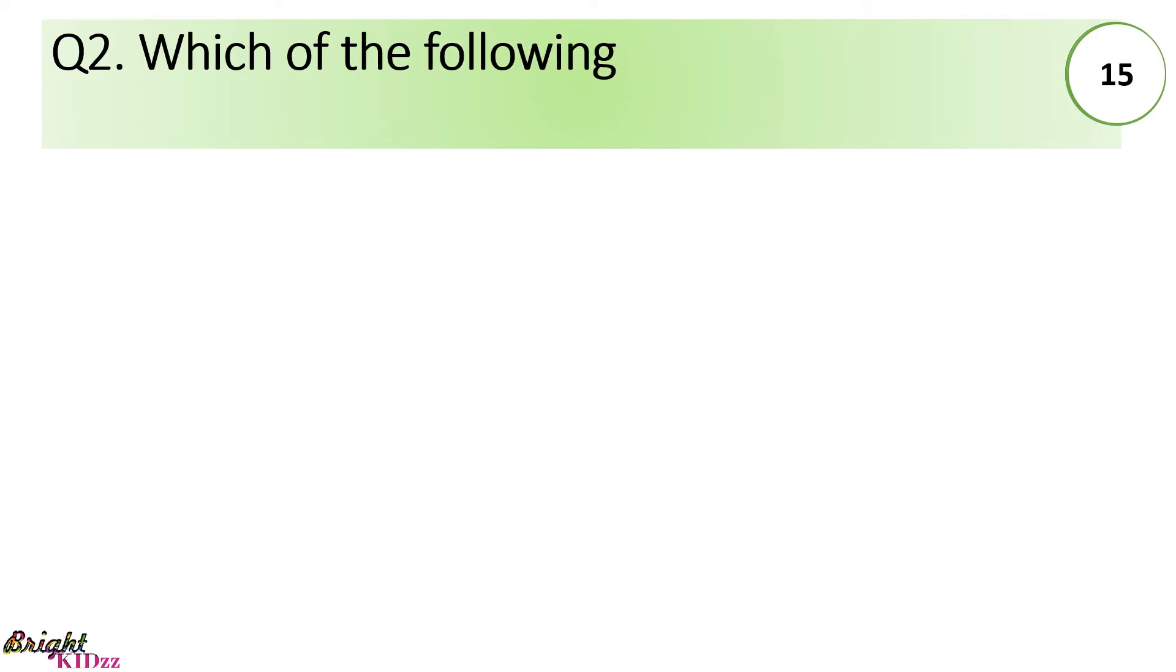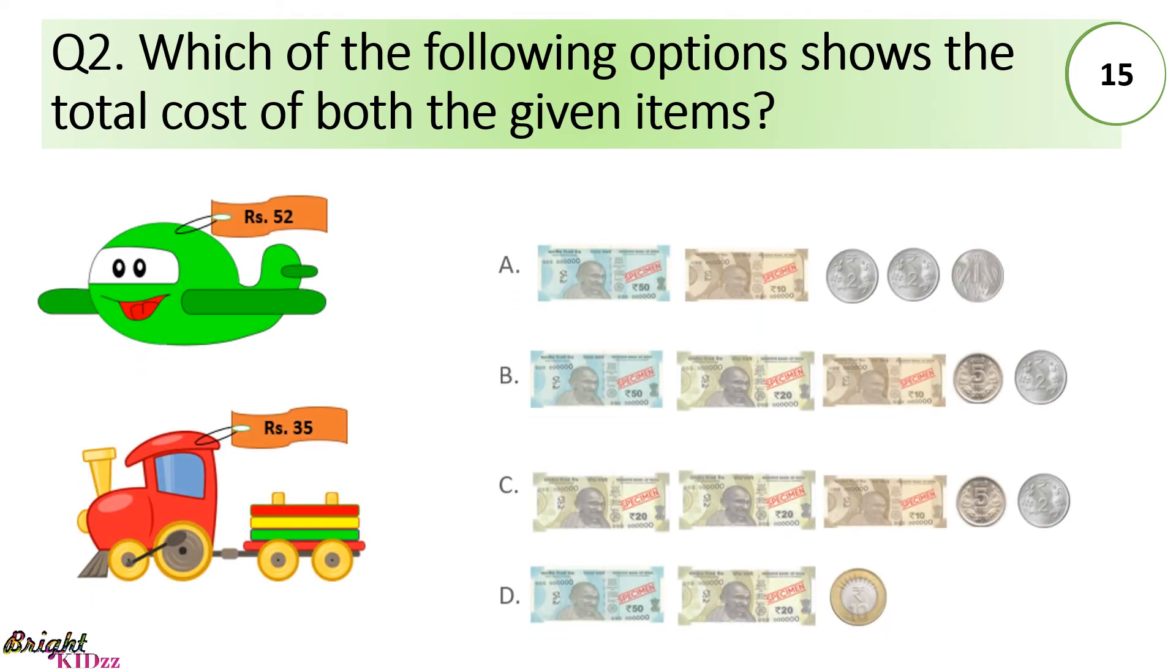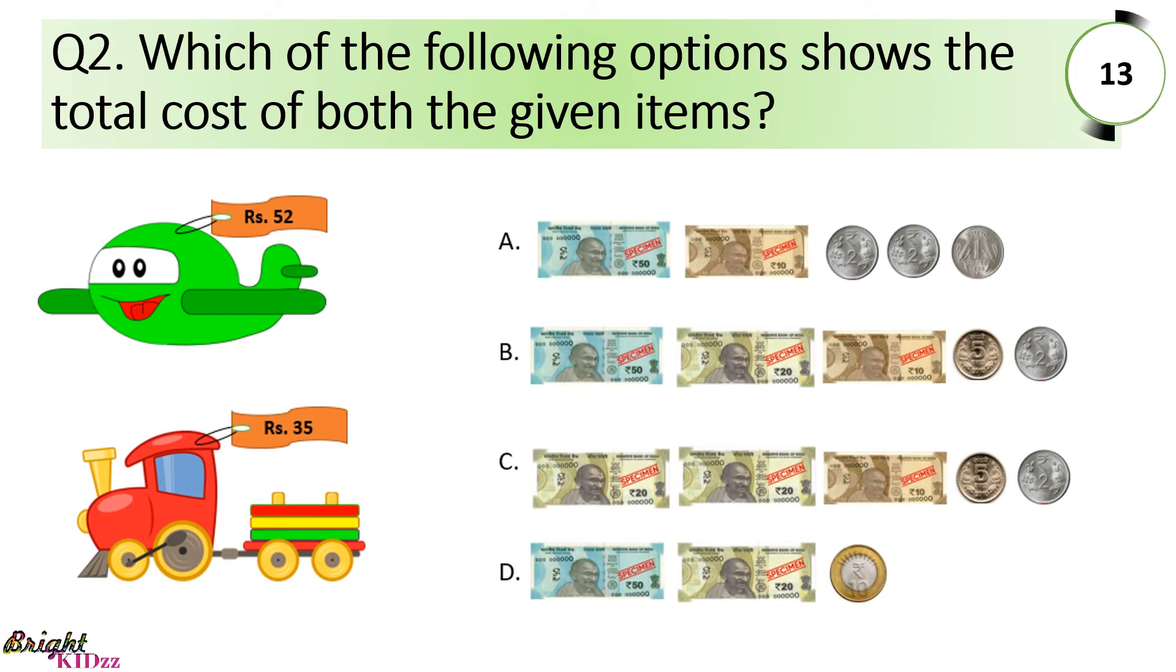Which of the following options shows the total cost of both the given items? 52 plus 35 is equal to 87. So, here we can see option B is showing 87, 50, 60, 70, 80, 85 and 87.